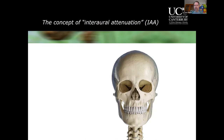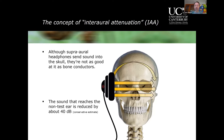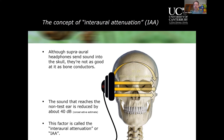Bone conduction is super efficient at getting vibration to the other side, but a speaker on the side of the head is less efficient — the signal fades as it crosses to the contralateral ear. With supra-aural headphones, the sound that reaches the non-test ear is reduced by about 40 decibels. We call this interaural attenuation — as the sound passes between the ears, it gets smaller on the far side.